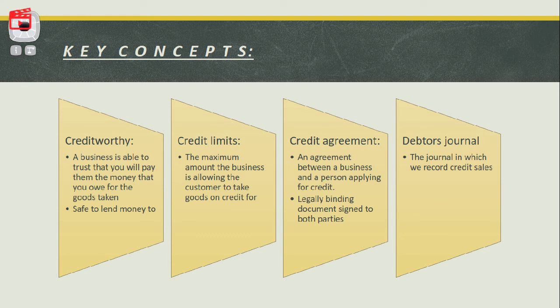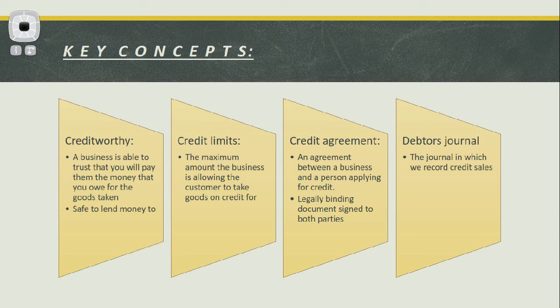A credit agreement is an agreement between a business and a person applying for credit, and this is legally binding — meaning it is a document signed by both parties, agreeing to the terms and conditions stated. Then lastly, our DJ — that is our debtors journal — and this is the journal in which we record credit sales.